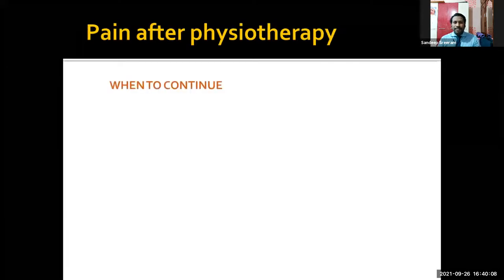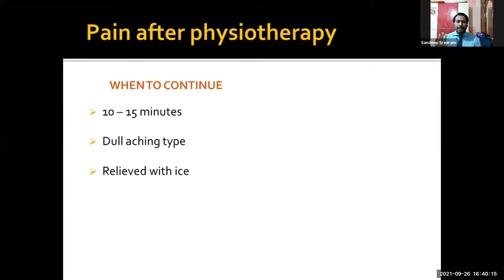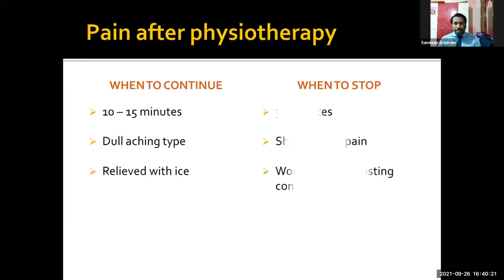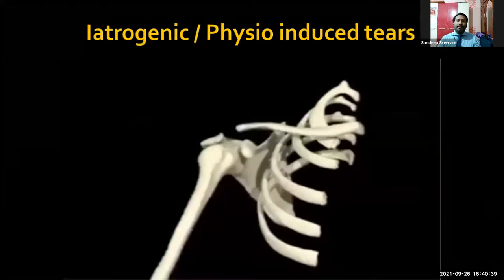We call this the shoulder TRACK program — training, rehabilitation, and conditioning. It is based on simple exercises that can be done at home without specialized equipment, and it is highly effective. The key to success is consistency, as patients tend to stop exercises once pain subsides. For impingement: phase one is postural and stretching exercises, phase two is strengthening exercises, and phase three is strengthening against resistance. For frozen shoulder, the focus is more on range of motion rather than strengthening. If pain persists for more than 10–15 minutes, dull and aching but relieved with ice and rest, continue physiotherapy. But if pain persists beyond 30 minutes or there is sudden worsening, re-evaluation is needed — possible iatrogenic physio-induced tear or even fracture post-physiotherapy.